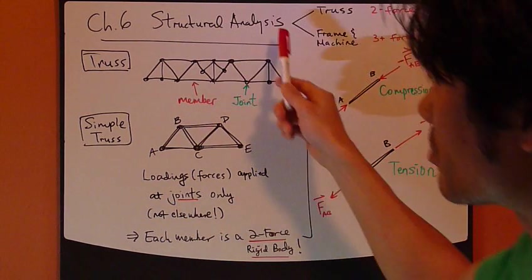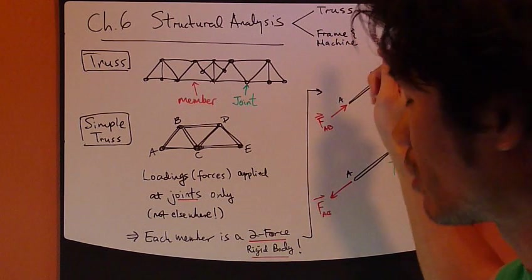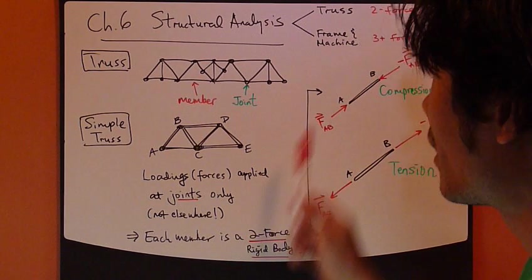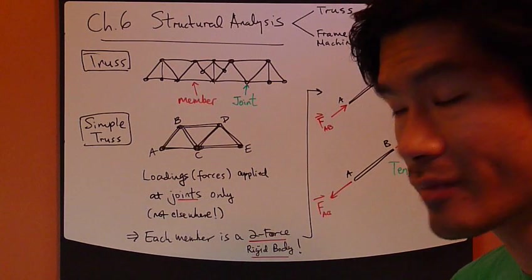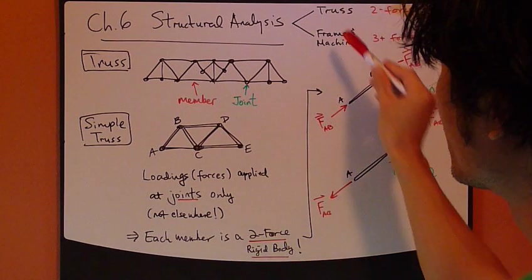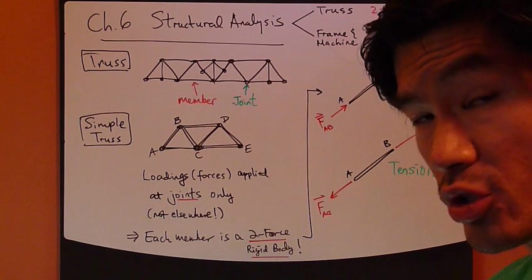Now, this chapter is split into two parts. The first part, which is really the bulk of it, is called a truss. And the second part, frame and machine. Quite similar, and the major difference is for a truss, we're dealing with two-force body, two-force rigid body.